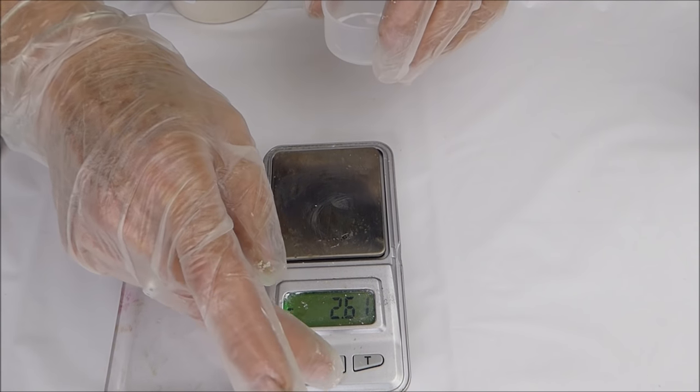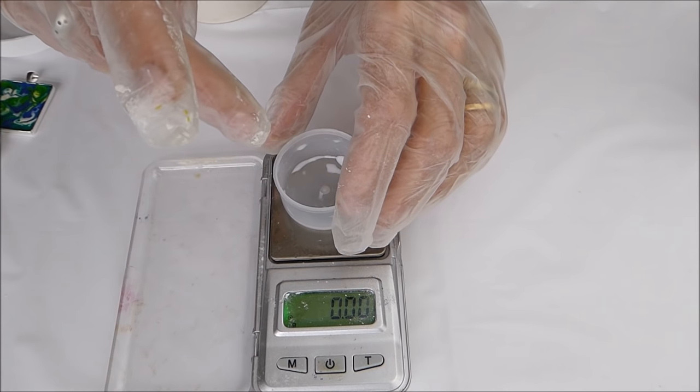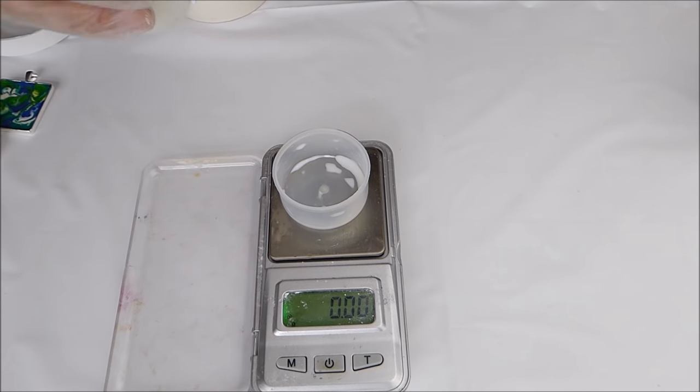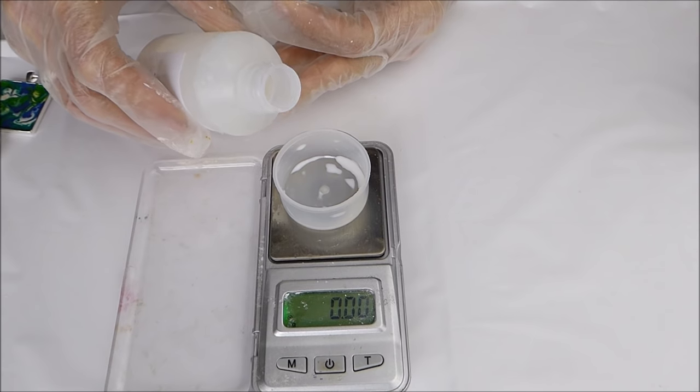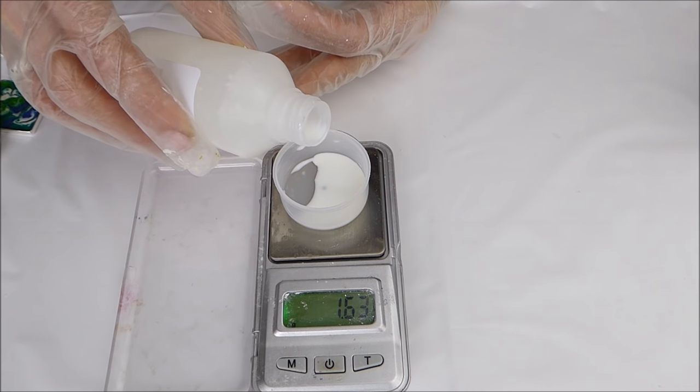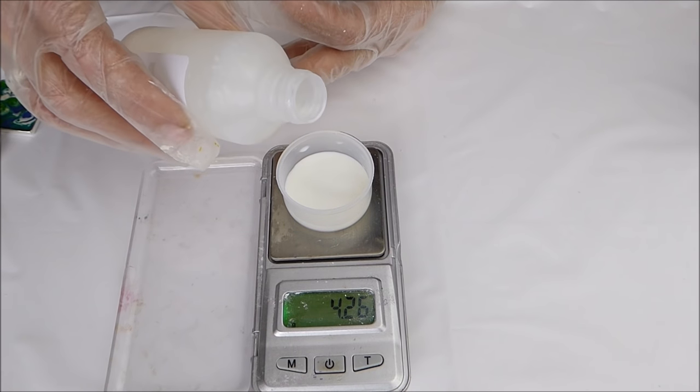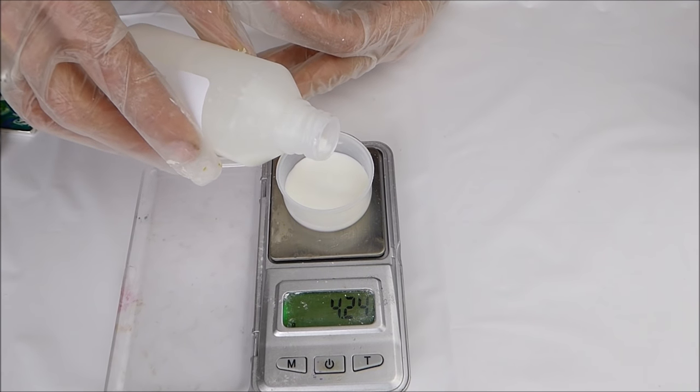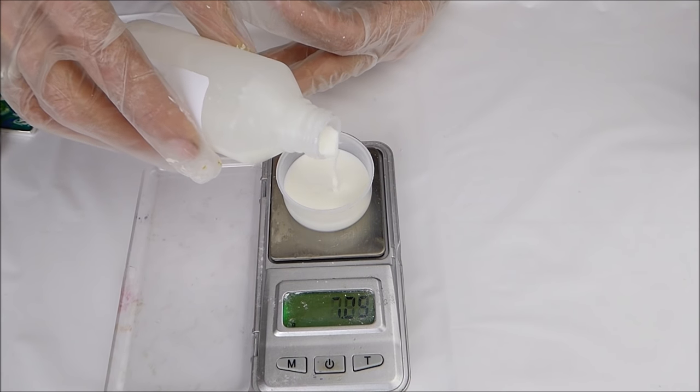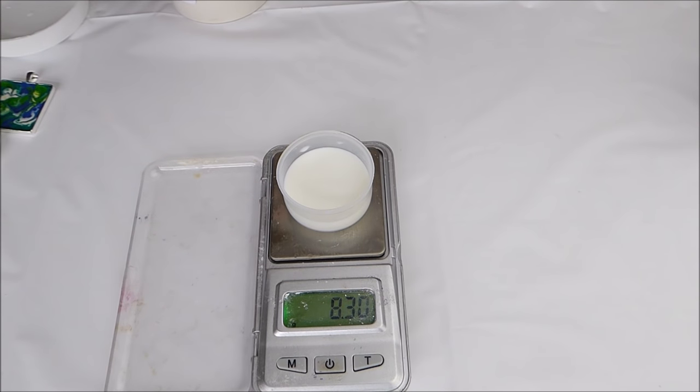Now I'm going to put an empty plastic cup on the scales, set that to zero. I'm going to pour out eight grams of the liquid. Careful you don't spill it on your scales. A little bit over eight, again that's fine.